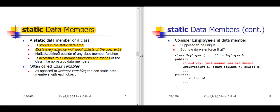As a picky technical detail, it turns out that you have to define a static data member outside of any of the class member functions, which you typically do in the code file for the class. Such a static data member is often called a class variable because the data member applies to the class as a whole, as opposed to what are often called instance variables, which are the individual non-static data members contained within each object of the class.